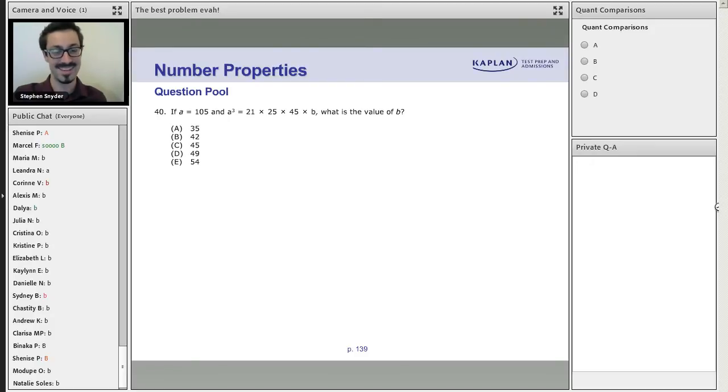I think once we get into this problem you're going to see why it is my all-time favorite. It looks kind of complicated but it's not really that bad. It says if a equals 105 and a cubed equals 21 times 25 times 45 times B, what is the value of B?